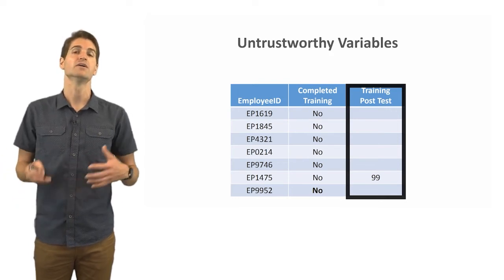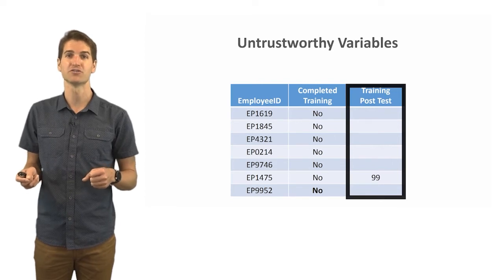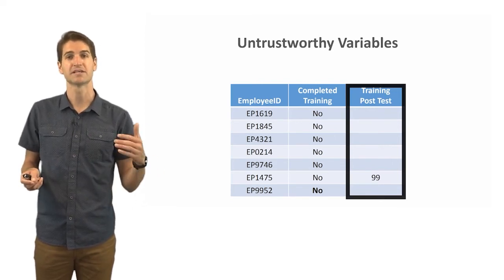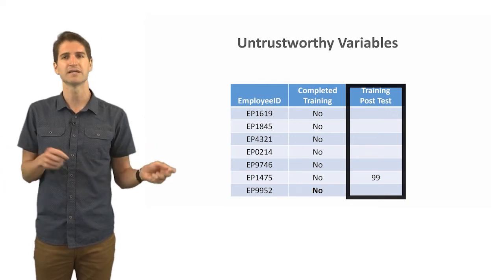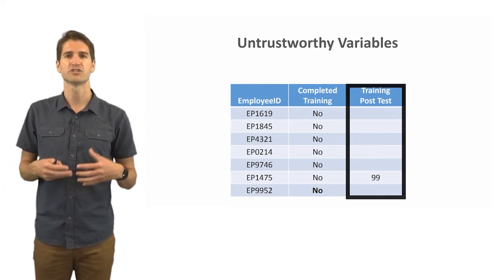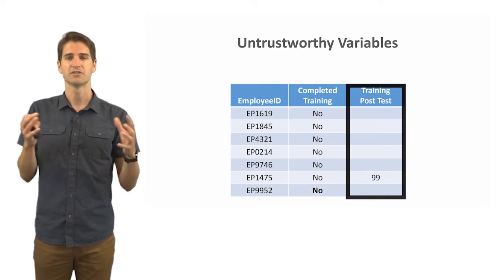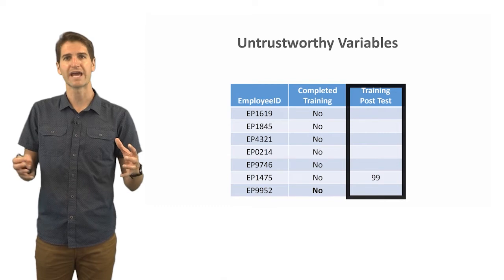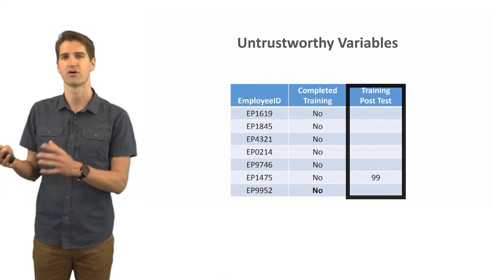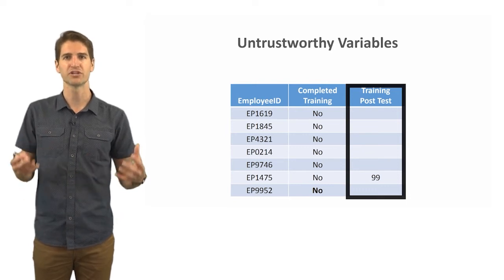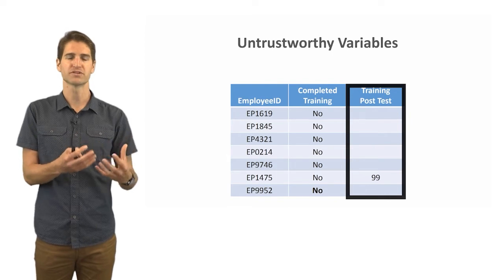This is not going to be useful for us here because we don't have any variability and we would assume that if someone has completed the training that they should have completed a training post-test, or at least you'd hope they have. In this instance too we see that there's a discrepancy: in that completed training column for that person it says they did not complete the training, yet somehow they completed a training post-test.